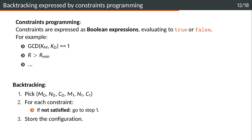Backtracking works like this. We first pick a set of parameters M0, N0, C0, M1, N1, C1. Then we check that all the constraints are satisfied. If one of them is not, then we go back to step 1, pick another set of parameters, and start again. However, if all constraints are satisfied, then we store this configuration because it's a good one.